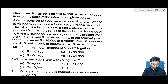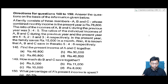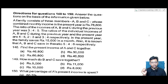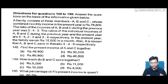In this video I'll be explaining the best way to solve this particular question. The question says: a family consists of three members A, B, C whose combined monthly income in the present year is 78,800. The ratio of the incomes of A, B, C during the previous year was 3:4:5. The ratio of individual incomes of A, B and C from previous year to present year is 4:5, 2:3, and 3:4 respectively. In the present year the family saves 15,000 in a month. In any data interpretation question, the first and foremost thing is to understand the question properly.